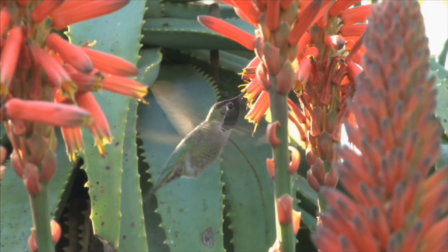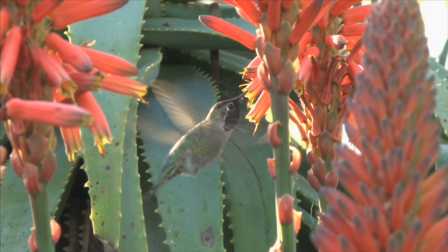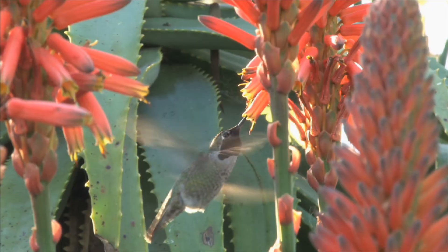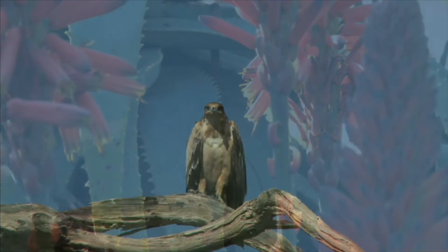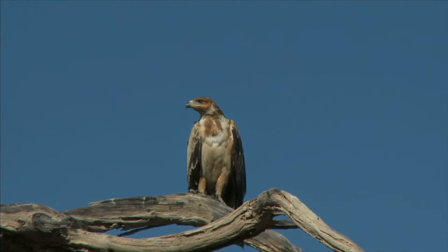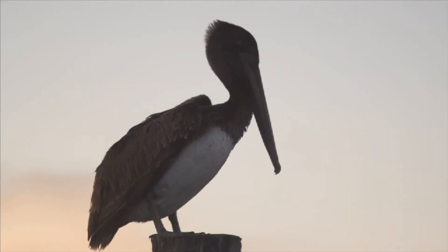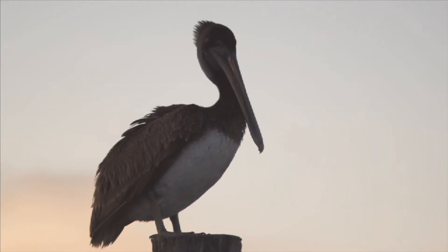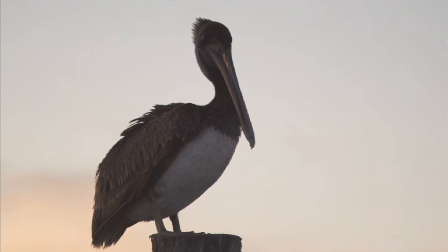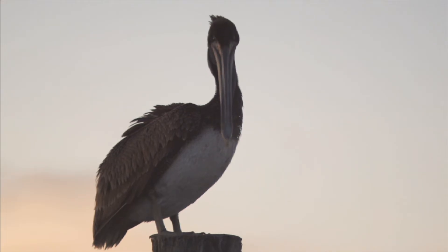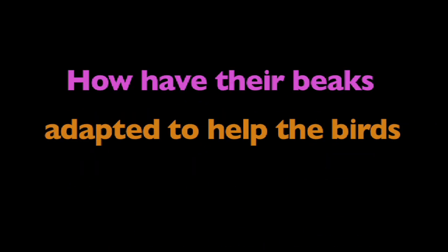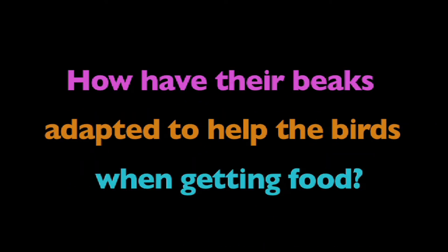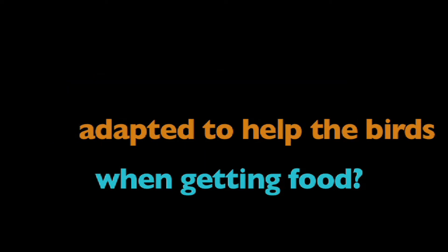Now that you better understand adaptation, think about this: a hawk has a curved beak and a pelican's beak is long and pointy. How have their beaks adapted to help the birds when getting food? Think about it.